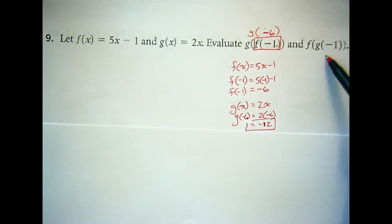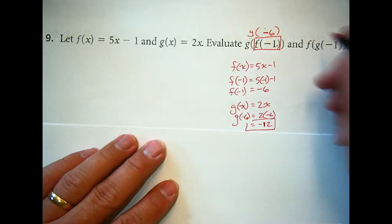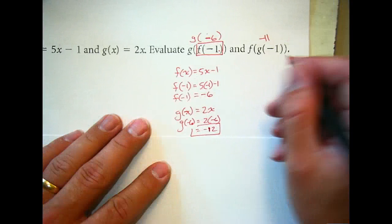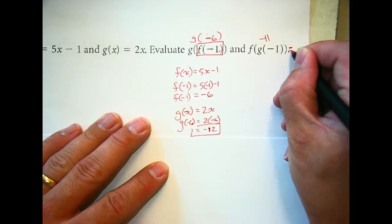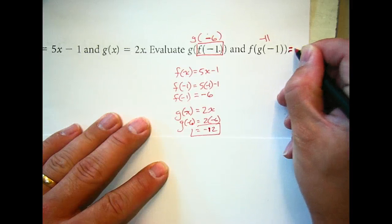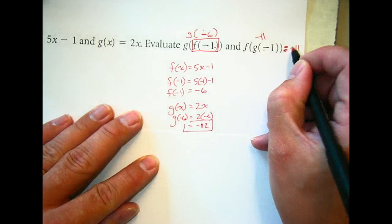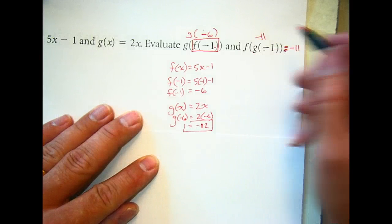Who has the answer for this one? I'm not going to work it out. Jocelyn, what do you got? Negative 11. Anyone second that? Anyone get something different? So this is -11. We agree that f(g(-1)) is -11.